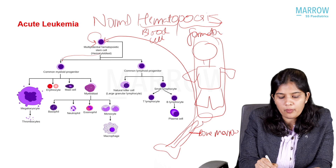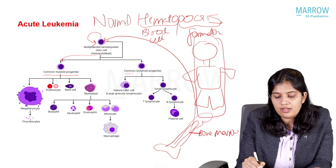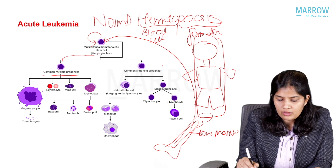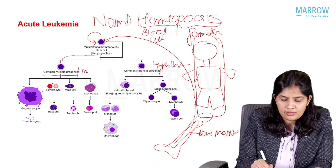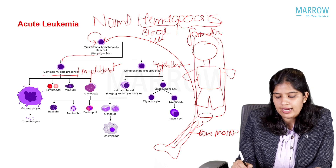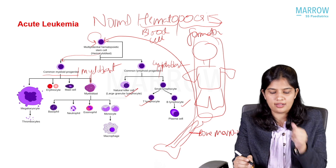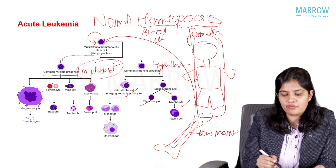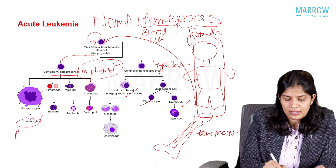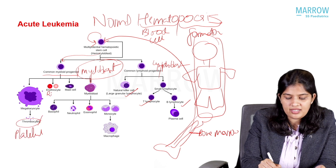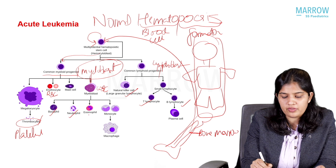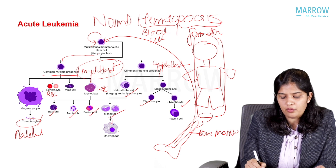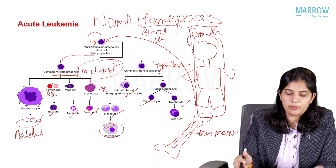These stem cells differentiate either into a common myeloid progenitor, called a myeloblast, or a common lymphoid progenitor, called a lymphoblast. Lymphoblasts will form B lymphocytes, T lymphocytes, or natural killer cells. Myeloblasts will form thrombocytes (platelets), RBCs, and certain WBCs — basophils, neutrophils, eosinophils, and monocytes — which eventually form macrophages. This is how normal hematopoiesis happens.